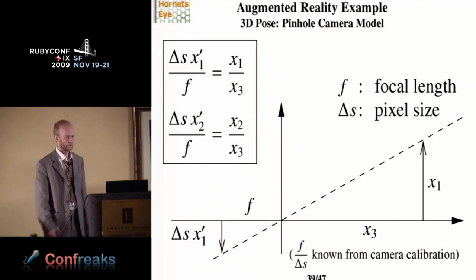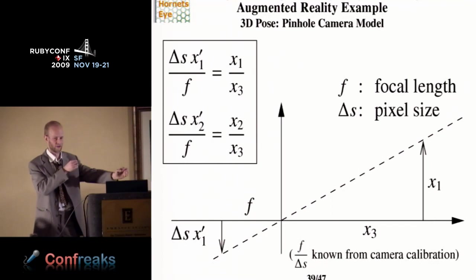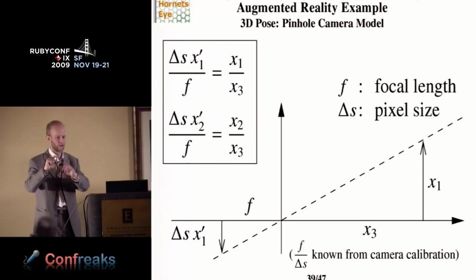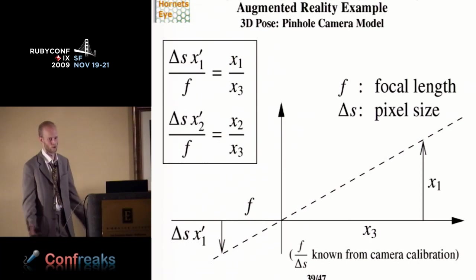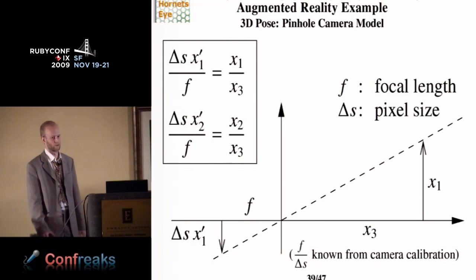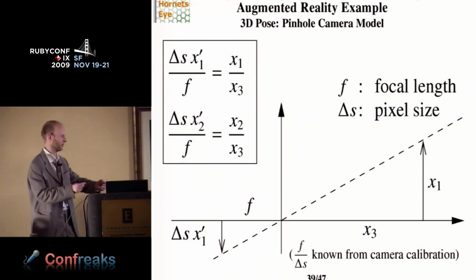And we start out with, I guess everybody knows this, the pinhole camera model. The pinhole camera model just says the size of the object X1 divided by the distance of the object X3 equals the size of the image on the camera chip divided by the focal length. And the size of the image on the camera chip is the number of pixels times the actual size of a pixel on the chip. So delta S is the pixel size on the camera chip and F is the focal length. And the ratio, F divided by delta S, you need to know. But you can, for example, do this using camera calibration or maybe you can even get it from the specification of the camera. And this, of course, holds for both dimensions in 3D. So X1 to X3, you have an equation for the first dimension. You also have an equation for the second dimension which gets projected.